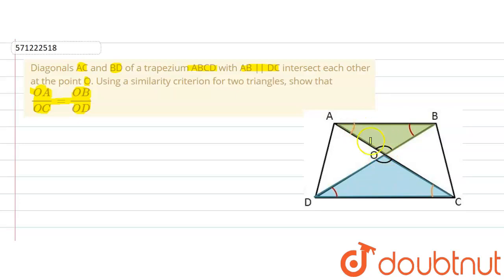Now we are going to consider these two triangles, triangle AOB and triangle DOC. In both these triangles we can observe that angle AOB will be equal to angle DOC, because vertically opposite angles are equal.